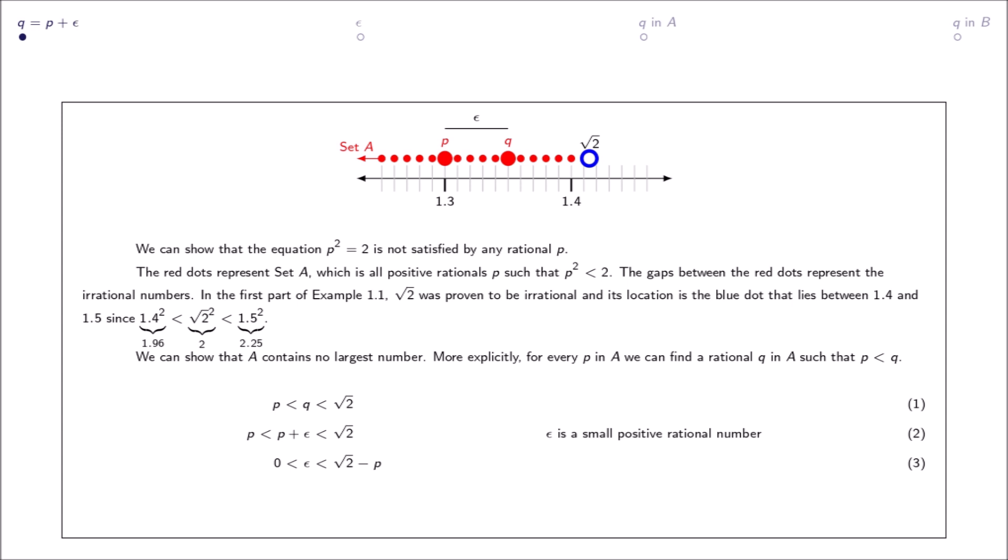Here, epsilon is a small positive rational number. From inequality 2, if we knew epsilon then we could find q. Thus, our goal is to find a possible epsilon.